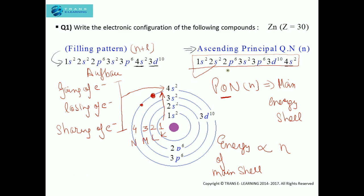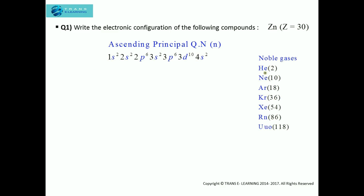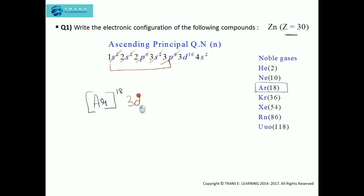Sometimes it becomes quite lengthy to write the electronic configuration in this manner, so to simplify it we use the electronic configuration of noble gases. All you have to do is choose the nearest noble gas configuration. The atomic number of zinc is 30, so the nearest noble gas is argon with atomic number 18. We eliminate 18 electrons from the configuration, leaving 3d10 4s2. This is the electronic configuration of zinc using the nearest noble gas configuration.